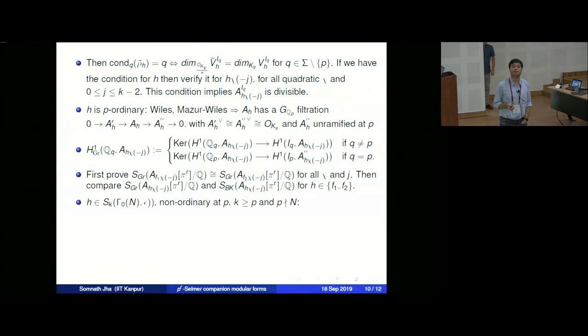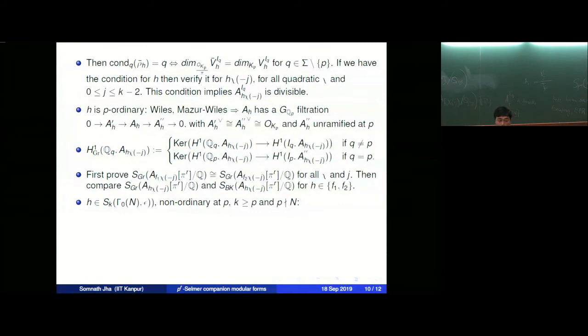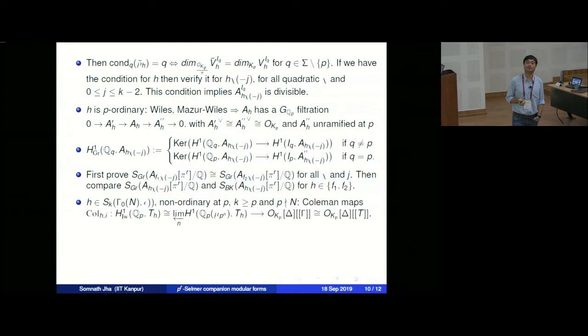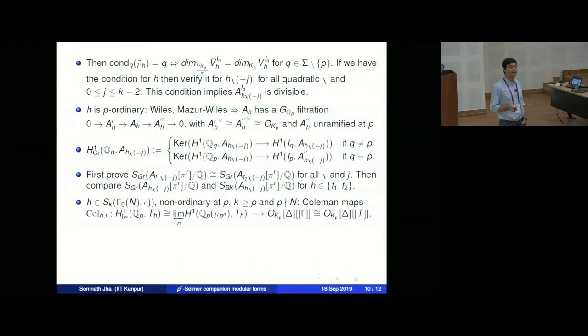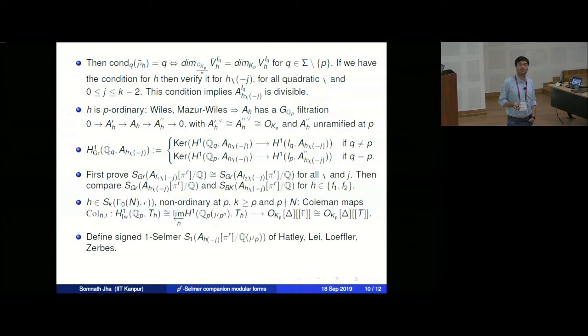If they are non-ordinary at p and p does not divide N, then by the fundamental work of Shinichi Kobayashi for elliptic curves, and recent work of Florian Sprung, Antonio Lei, David Loeffler, and Sarah Zerbes, they define plus-minus Selmer groups (signed/sine Selmer groups) for modular forms non-ordinary at p. When the thing is non-ordinary, we compare it with the signed Selmer group. We first prove the result for the Greenberg or signed Selmer group, then compare the Bloch-Kato Selmer group with those.